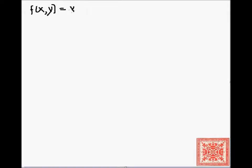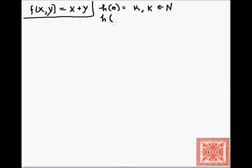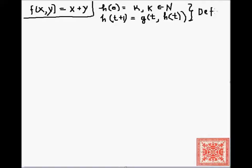Let's show that binary addition is primitive recursive. We define binary addition as f(x, y) = x + y, renamed as 'add' for clarity. There are two definitions of primitive recursion introduced in the previous screencast. Definition one: h(0) = k for some k in the natural numbers, and h(t+1) = g(t, h(t)), where g is some total function.